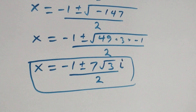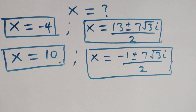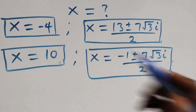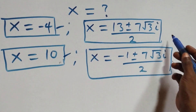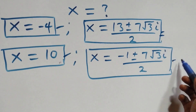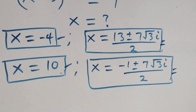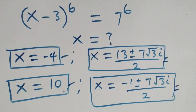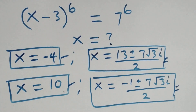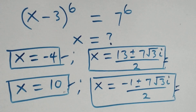Therefore, altogether we have 6 solutions: 2 real solutions and 2 complex solutions from Case 1 and 2 complex solutions from Case 2. Thank you for watching. Don't forget to subscribe for more videos, turn on the notification bell, share this video, give it a thumbs up, and post your comments. See you next class, bye for now.